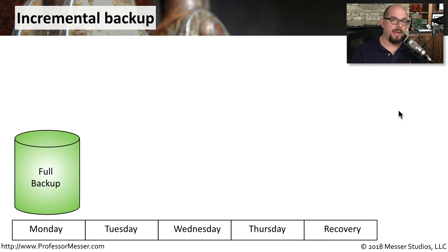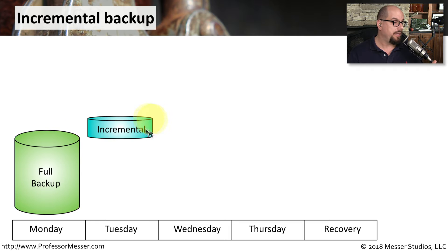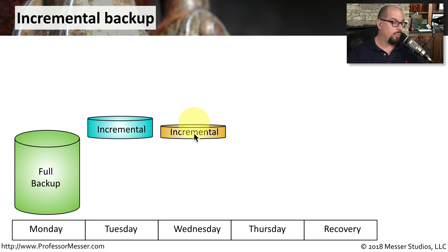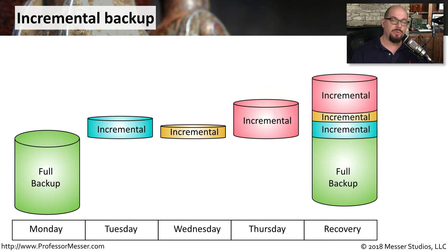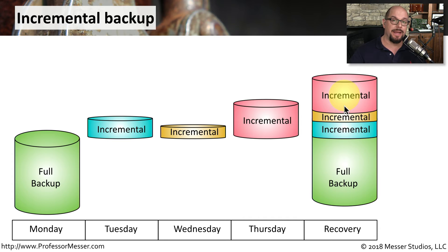Here's how an incremental backup might work. You would start on Monday by performing a full backup. On Tuesday, we're only going to backup any files that have been incrementally changed since our last full backup. On Wednesday, we're only going to backup any files that have been changed since both the full backup and the previous incremental backup. On Thursday, we'll perform another incremental backup, which has a unique set of data — only the files that have been changed since the previous backups have occurred. To recover, we need both the full backup and all of the individual incremental backups to create an entire full recovery of all of the data.